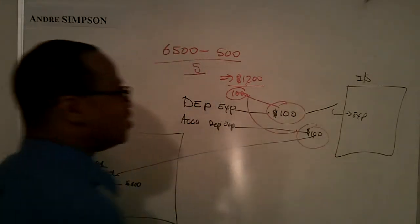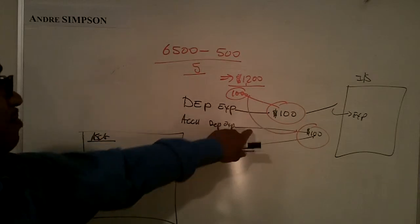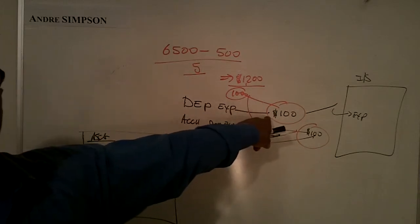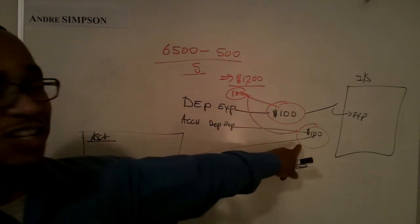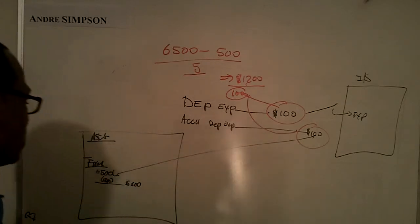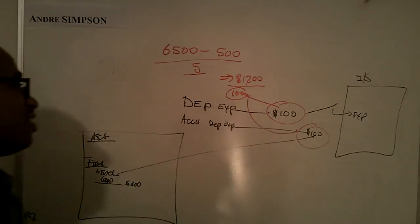We then made the journal entry here. Debited depreciation expense, credited accumulated depreciation, that goes here, and this goes here.